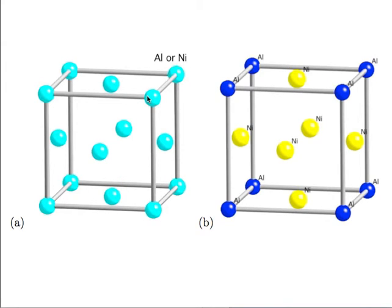In cubic F, looking at the 1,0,0 planes - the faces - I have atoms in the middle which will diffract exactly half a wavelength out of phase. So when I do diffraction experiments I don't pick up 1,0,0 planes but I will pick up 2,0,0 planes at half the spacing, because there is nothing in between. When we do structure factors you will be able to prove this for any kind of plane.